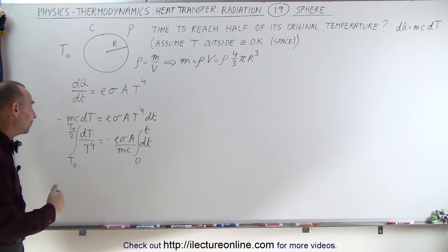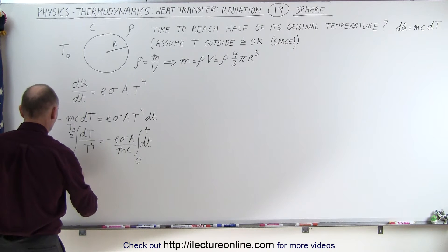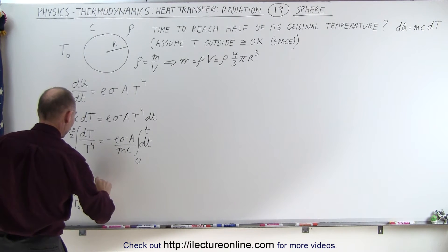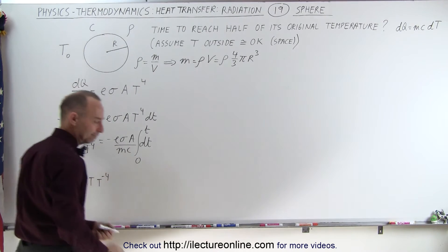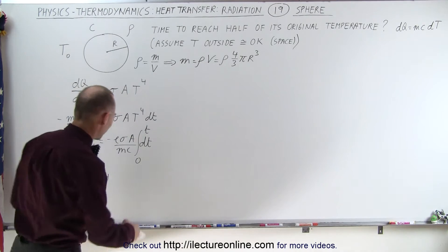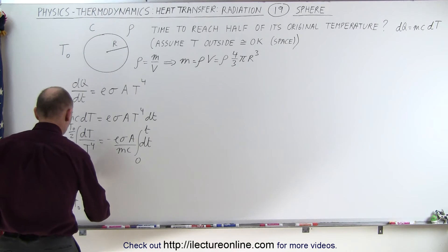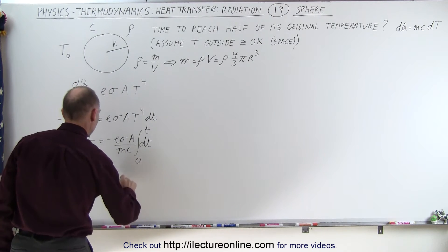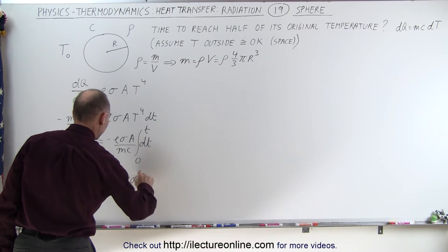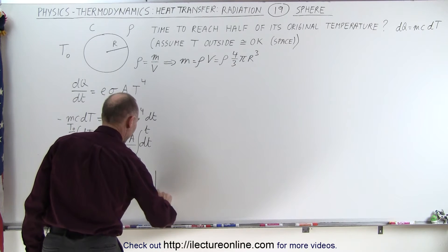The right side is easier to integrate. Even the left side is not bad, because this can be written as an integral from T initial to T initial divided by two of T to the minus four power times dT, and that is equal to minus epsilon sigma A over mc, and already integrated, t evaluated from zero to t.